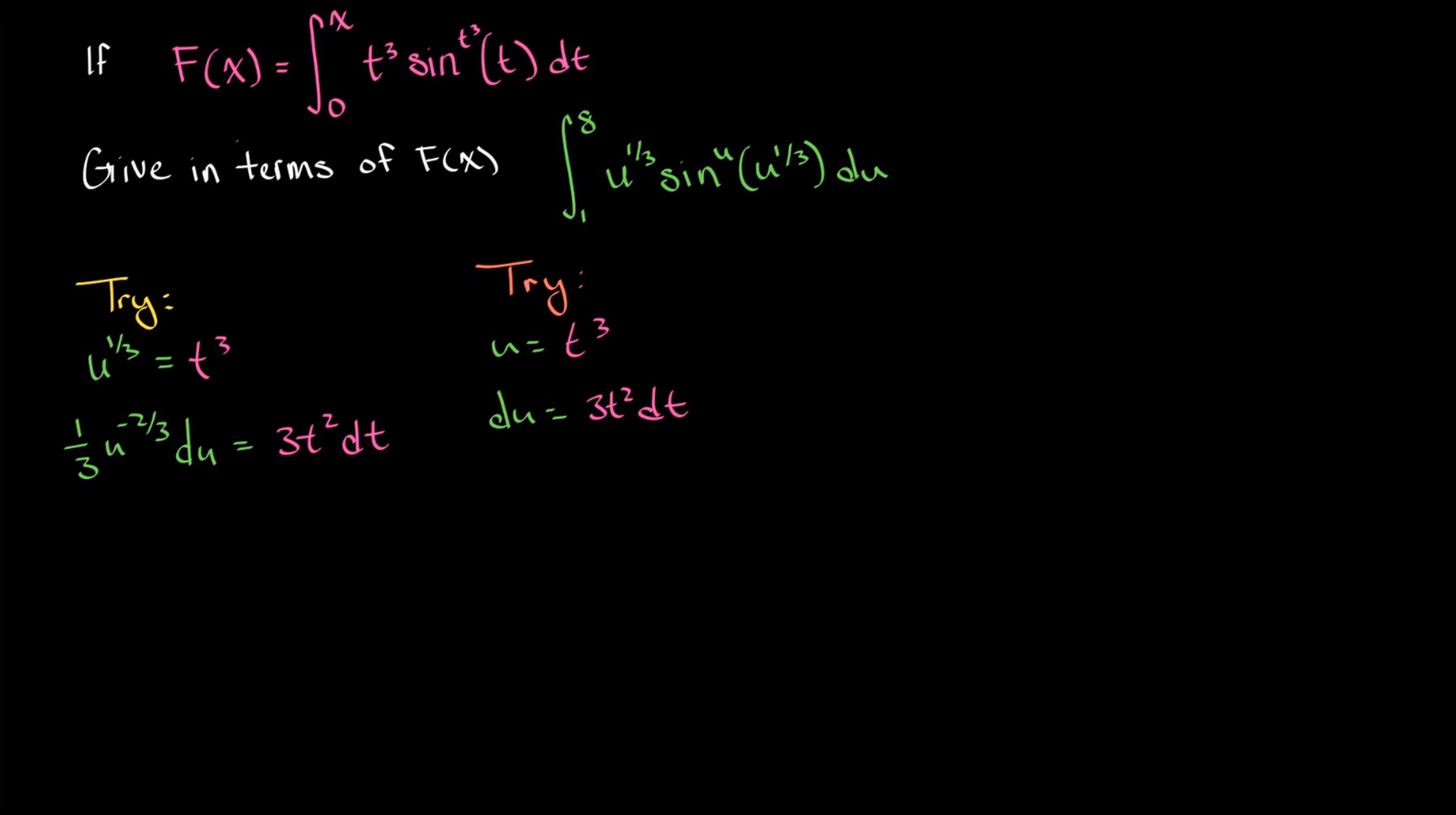In order to do that, we need some new limits of integration. We have our upper limit is 8 and our lower limit is 1 and they're in terms of u, but now we need them in terms of t. So in terms of t, our new upper limit is going to be 2 and our new lower limit is going to be 1 still.